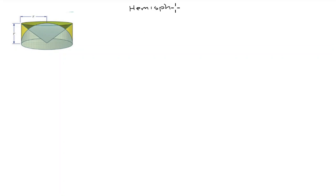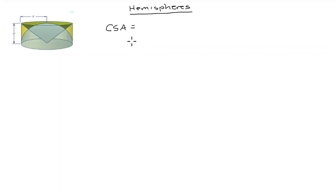So what we look at are hemispheres. A hemisphere — if we think about the curved surface area, we'll just abbreviate it. The curved surface area of a hemisphere is the curved part. It's half of the surface area of a sphere, so therefore the formula for this is going to be 2πr², that's 2 times pi times r squared. That's going to be the curved surface area.